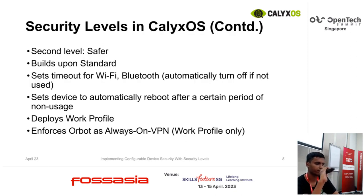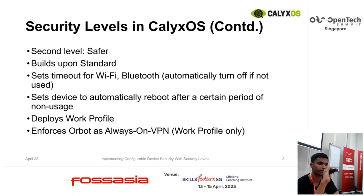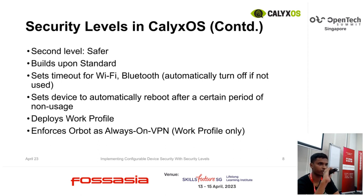Then there is the second level, which is Safer. Safer builds on the non-standard settings — what it does is set a timeout for the Wi-Fi, which means that it automatically gets turned off when it is not being used for a certain period of time. That period is of course configurable. Which means that if you leave home with your Wi-Fi on and it's not in use while you are in transit, it gets automatically turned off. We also set the device to reboot automatically after a certain period of inactivity, so that after a certain period of time, if the device is not being used, it will automatically reboot, and then you will only need the PIN to unlock — fingerprint-based unlock won't work.